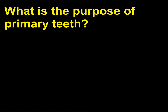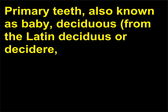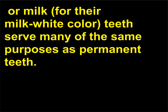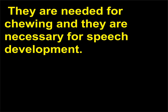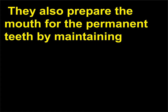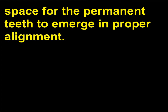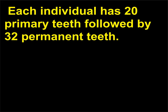What is the purpose of primary teeth? Primary teeth — also known as baby, deciduous (from the Latin decidere, meaning 'to fall down or off'), temporary, or milk teeth (for their milk-white color) — serve many of the same purposes as permanent teeth. They are needed for chewing and are necessary for speech development. They also prepare the mouth for the permanent teeth by maintaining space for the permanent teeth to emerge in proper alignment. Each individual has 20 primary teeth followed by 32 permanent teeth.